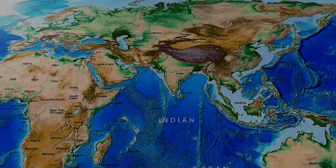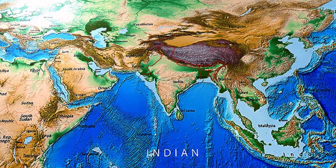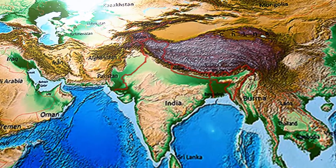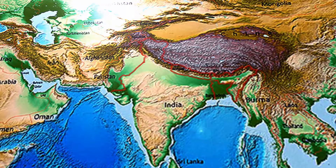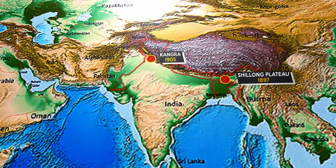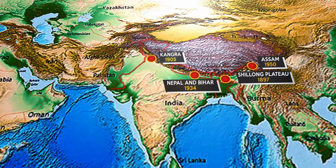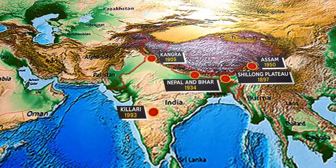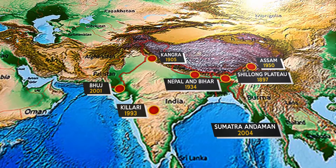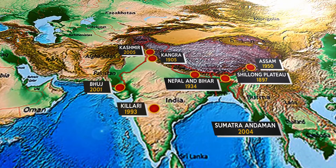In the past 200 years, India has witnessed several earthquakes and many of them have caused great damage to life and property. The significant ones are the 1897 Shillong Plateau, 1905 Kangra, 1934 Nepal and Bihar, 1950 Assam, 1993 Kilari, 2001 Bhuj, 2004 Sumatra-Andaman, 2005 Kashmir, and 2015 Nepal earthquakes.